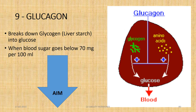Glucagon is a survival hormone which breaks down glycogen — liver starch — into glucose when blood sugar goes below 70 mg per 100 ml. But persistently high levels of glucagon are not good, as they keep increasing blood sugar. Our aim should be to reduce glucagon and the frequency of glucagon secretion as much as possible.